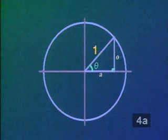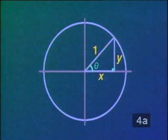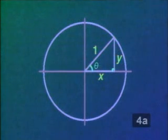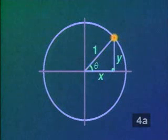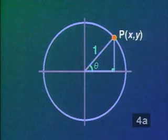Because A is the length of the horizontal side of the triangle, we can rename it X. Similarly, O, the length of the vertical side, is renamed Y. Thus, we can name the intersection of the terminal arm of angle theta with the circle point P, whose coordinates are X, Y.